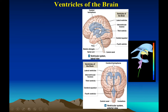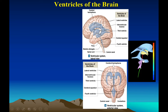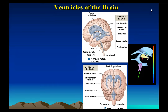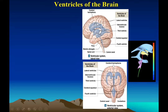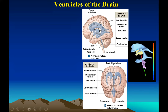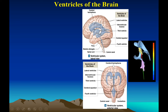In an anterior view, you can see the right and left lateral ventricles, the third ventricle, the aqueduct, and the fourth ventricle — the hollow cavities found inside the brain. The two lateral ventricles are divided by a tissue called the septum pellucidum. The third ventricle communicates with other ventricles via the interventricular foramen. The fourth ventricle extends into the medulla oblongata and is continuous with the central canal of the spinal cord.